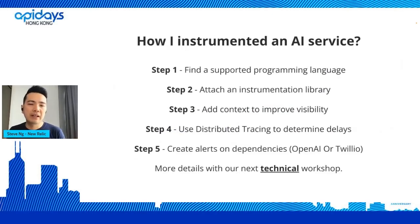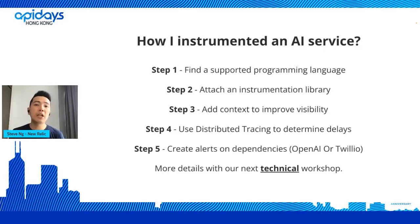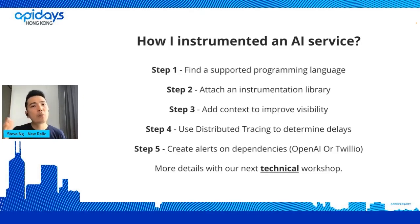How do you instrument an AI service? The likelihood is you're going to build more on the latest technology where you need to figure out the right instrumentation technique. You can leverage a SaaS-based or cloud-based service, or build your own. For distributed tracing instrumentation, first you need to find a supported programming language — Golang, Node, Python are all fine. Then you add an instrumentation library, which is an SDK that wraps around your application and automatically provides instrumentation context. Next, you add context to understand what's happening and use tracing to pinpoint delays within your service.